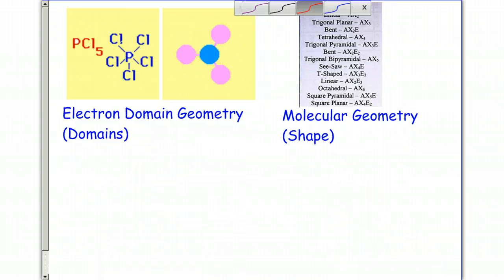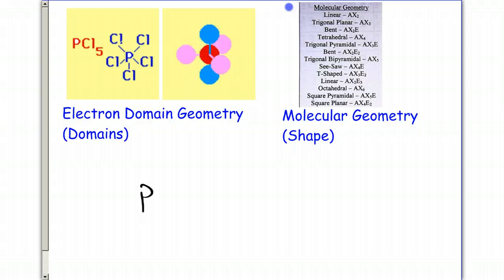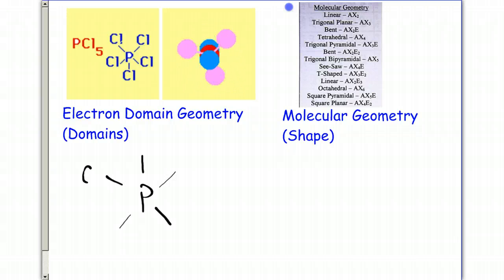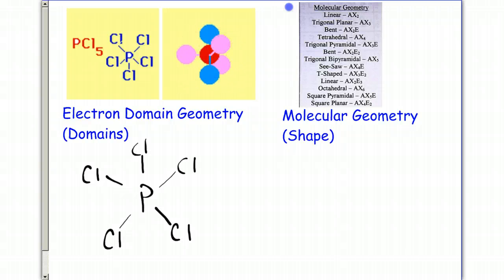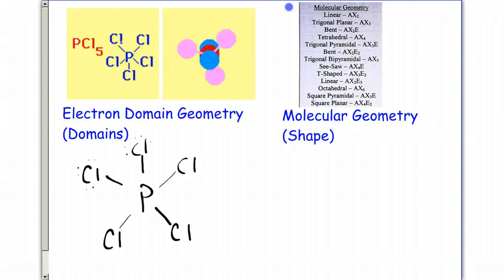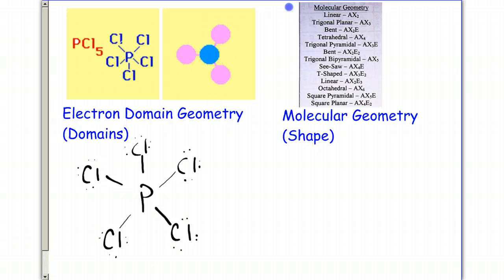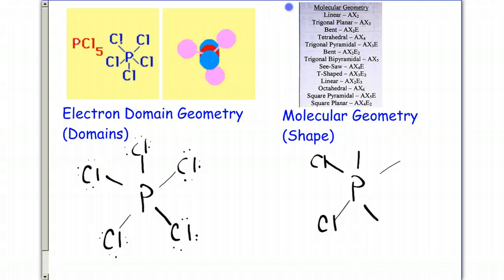Now PCl5. Again, each atom has an octet, so even though they weren't drawn, it's understood that each chlorine has three pairs of electrons around them. I won't draw them around the second molecule though.